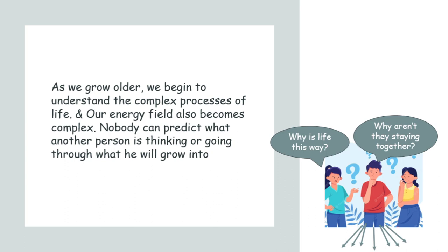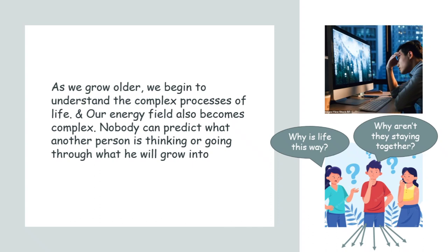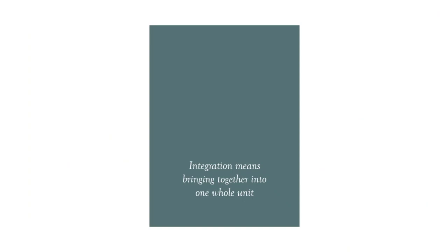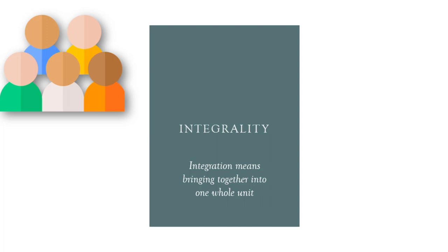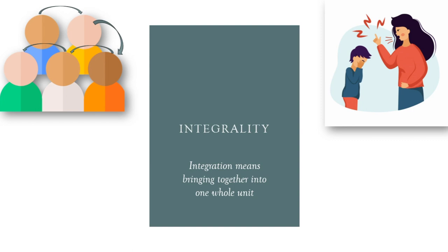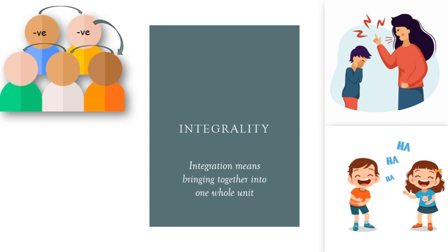Nobody can predict what another person is thinking or going through, or what they will grow into. We may be doing daily activities fine, but actually feel negative because of certain people or situations in our environment — and from outside, nobody can predict that. That is helicy. The third characteristic is integrality, which means bringing together into one whole unit. Our energy field doesn't remain contained to just us — it spreads from person to person. Like the angry teacher example: once students inform each other that he is coming back, the fear spreads; the energy field of one student affects another, and it is a continuous process that can cover the whole class. That is integrality.